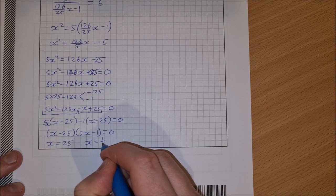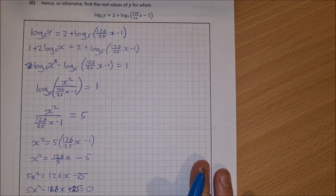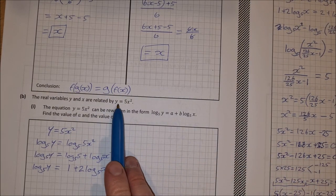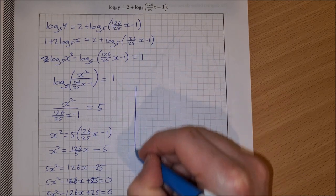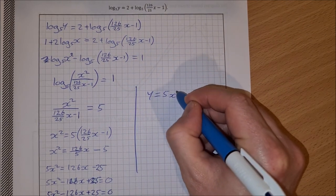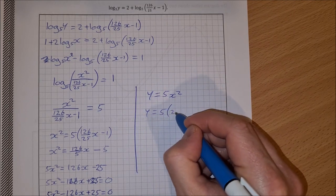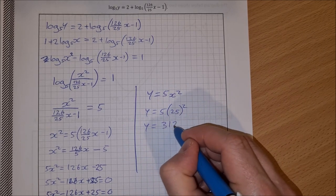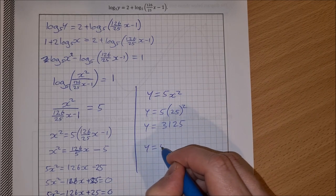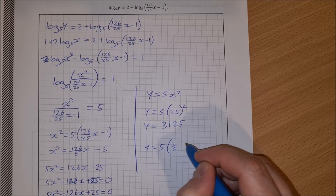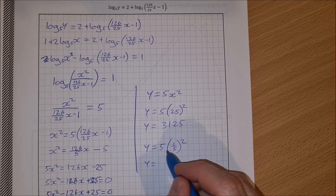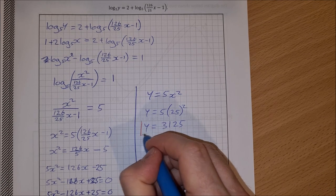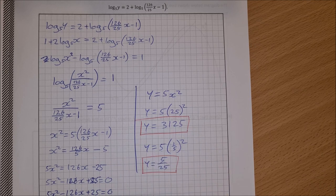Since we need y, not x, we use y = 5x². For x = 25: y = 5 × 25² = 5 × 625 = 3125. For x = 1/5: y = 5 × (1/5)² = 5 × 1/25 = 5/25. So the two solutions are y = 3125 and y = 5/25.